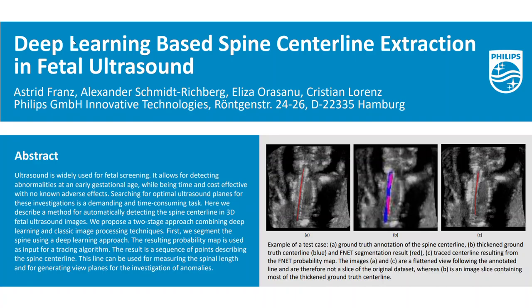We propose a two-stage approach combining deep learning and classic image processing techniques. First, we segment the spine using a deep learning approach. The resulting probability map is used as input for a tracing algorithm. In this way, we get a sequence of points describing the spine centerline.